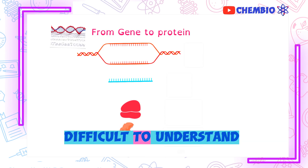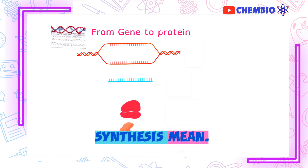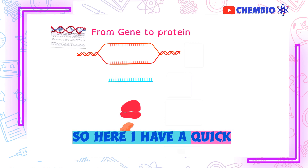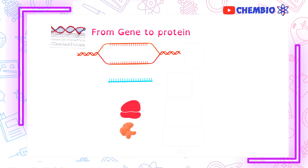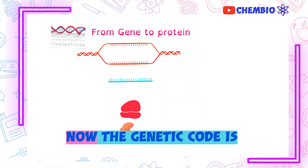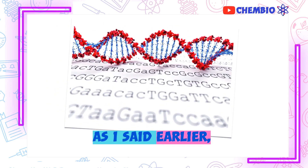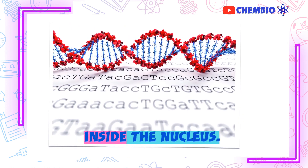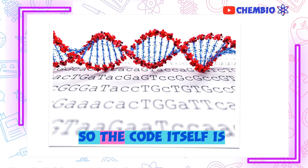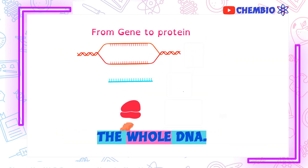Sometimes it's a bit difficult to understand what each step of protein synthesis means, so here is a quick analogy to make it easier. The genetic code is stored inside our DNA. The DNA is found exclusively inside the nucleus, so the code itself is going to be copied. I'm not going to copy the whole DNA — just a section of it.